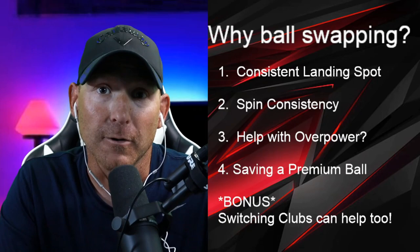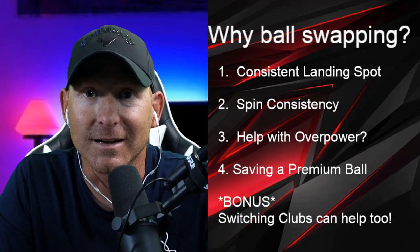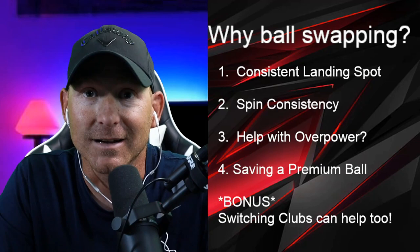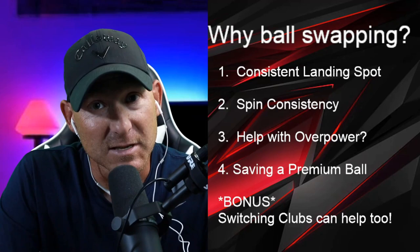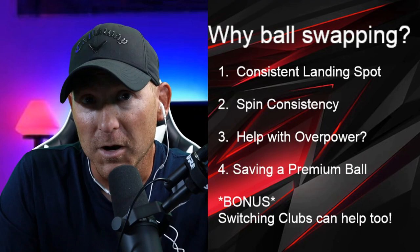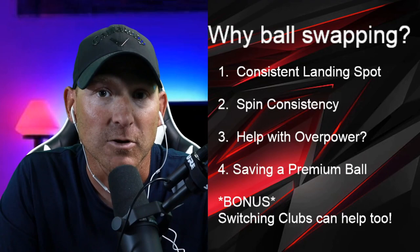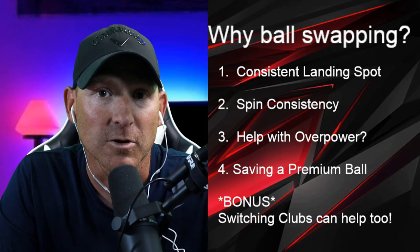We can also use this technique to help with overpower. If we switch to a power four or five ball and apply max overpower, we may have a slower needle than with a power one or two ball. And there's also the ability to save a ball — if we only have one or two power zero wind five balls, we can set up with that ball and then switch to a power one wind five ball that has the same capabilities.